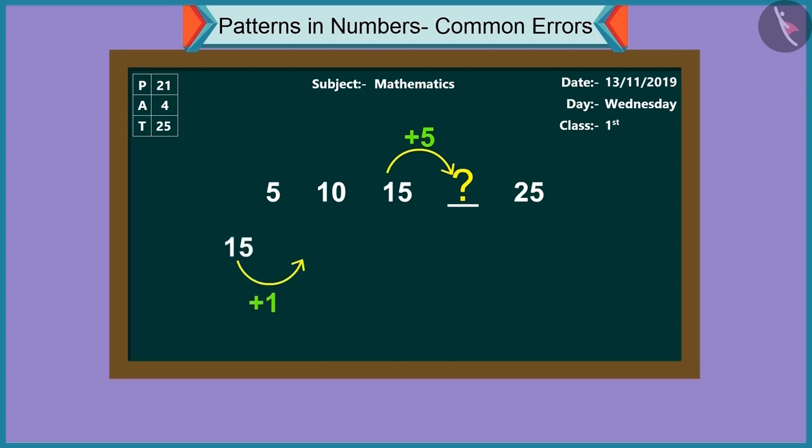If we add one to fifteen, we get sixteen. Adding two, we get seventeen. Adding three makes it eighteen. Adding four makes it nineteen. And adding five to fifteen will make it twenty. Twenty. So, the answer is twenty.